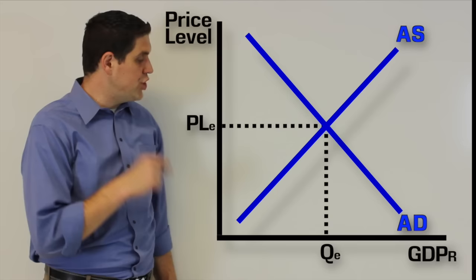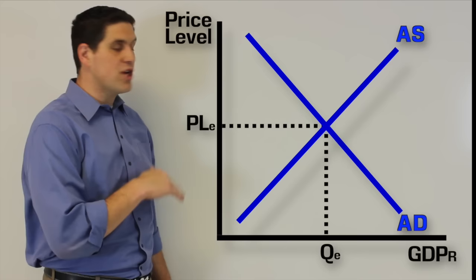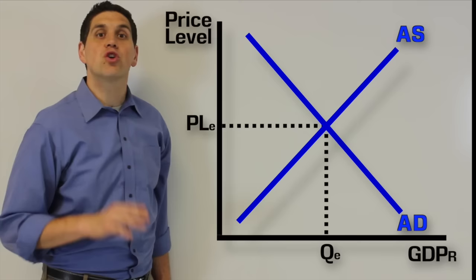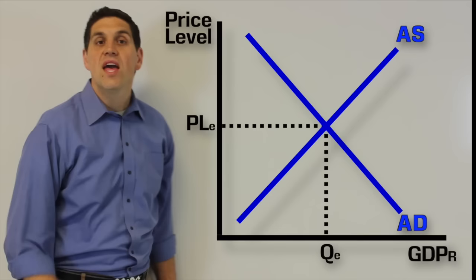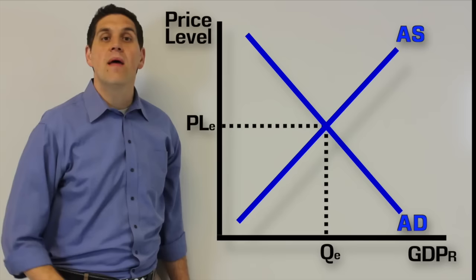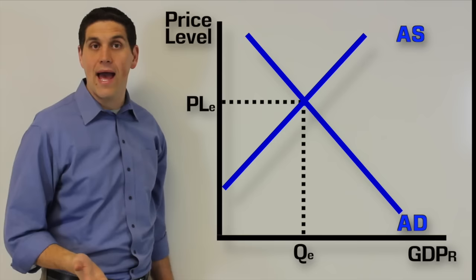Now just like a regular market, these curves can shift and the result will be a change in price level and output or GDP. If there's an increase in aggregate demand, the price level will go up and the quantity or the output will go up. If there's a decrease in aggregate demand, the price level will go down and the quantity will go down. If there's an increase in aggregate supply, the price level will go down and the output will go up. And if there's a decrease in the aggregate supply, the price level will go up and the quantity will go down. So there's only four possible things that can occur.